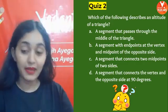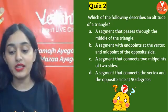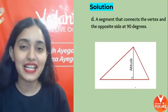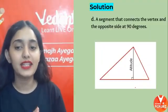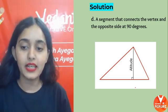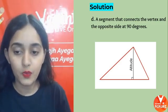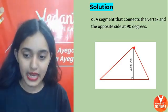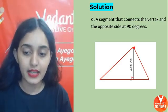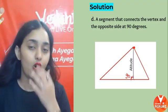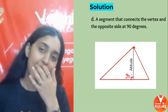Time's up. The correct option is D — a segment that connects the vertex and the opposite side at 90 degrees is called an altitude.